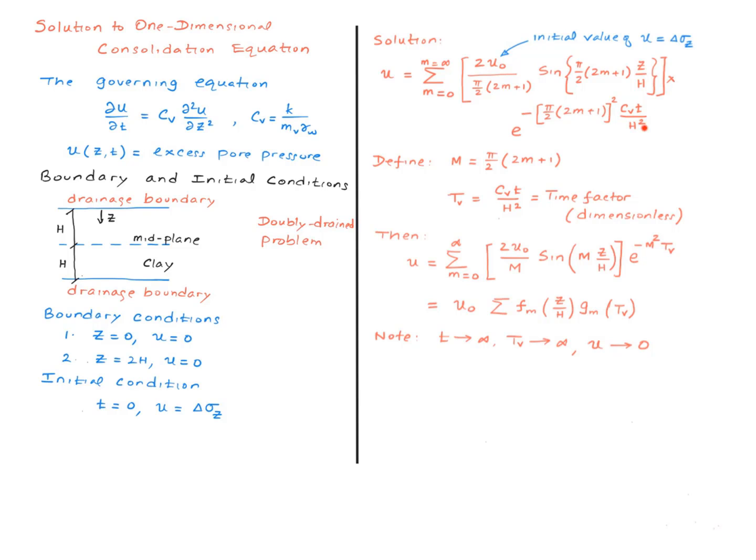Here is the solution. We have a series solution. A couple of things to note here. There is a counter little m that increases from zero to infinity in the series. Number two, this u-note here is the initial excess pore water pressure. And for our problem, that will be equal to delta sigma z.